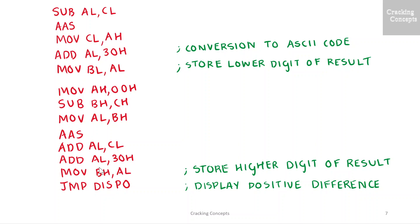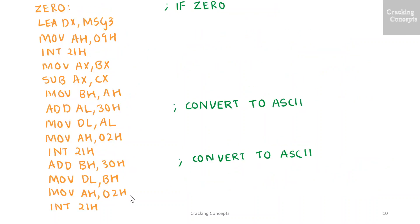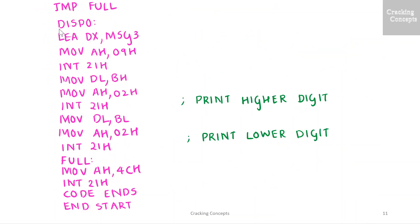Since the computation is over, I need to display the result. For this I'll jump to the label 'dispO', where I display the string MSG3 — that is 'the difference is' — using function code 09H. Then I display the result starting from the higher digit followed by the lower digit using function code 02H, that is BH then BL. I perform an exit from the program using function code 4CH.